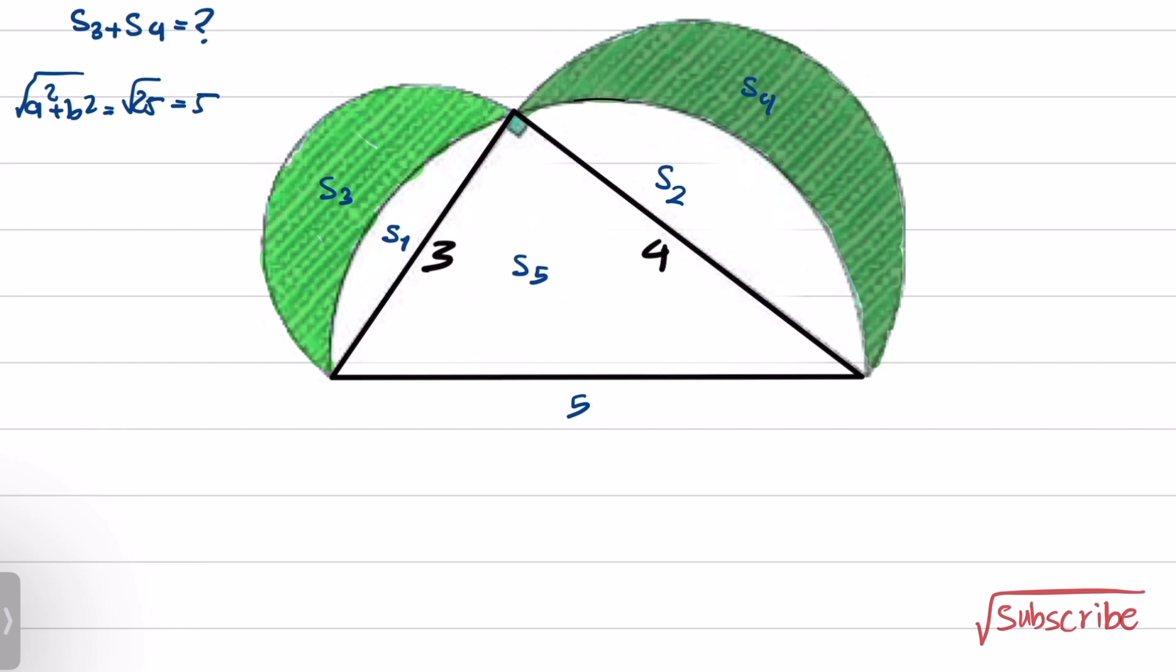As I mentioned, if I subtract the area of the half circle, which has radius of 5 over 2, from the right triangle, we have S1 and S2. So S1 and S2 is equal to the area of the half circle, which is 1/2 π times radius squared. Radius is 5 over 2 squared, minus the area of the right triangle that you see here.